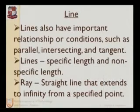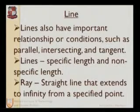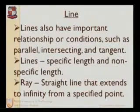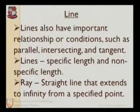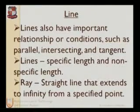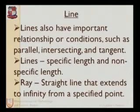Lines have a specific length or non-specific length. Basically lines have an infinite number of lengths, so we show the length just for convenience, and that is called a line segment. A ray is a straight line that extends to infinity from a specified point. A line is represented with arrows on both sides to indicate infinite limits.